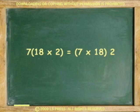And the same happens with multiplication. 7 times 18 times 2 equals 7 times 18 times 2. Whether you associate 18 and 2 first or 7 and 18 first, the answer will not change.